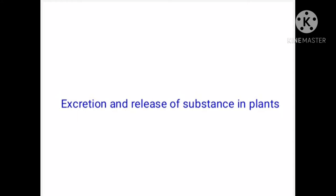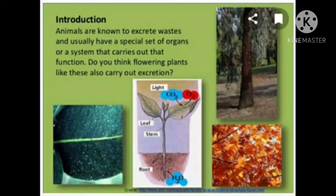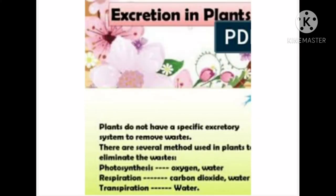A variety of end products are produced during metabolism, and nitrogenous wastes are important among them. All animals have special excretory organs to eliminate waste materials. Do flowering plants have such excretory organs? Plants do not have a special excretory system to remove waste, but there are several methods in plants to eliminate waste.